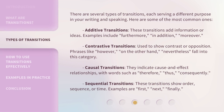There are several types of transitions, each serving a different purpose in your writing and speaking. Here are some of the most common ones. Additive transitions — these add information or ideas. Examples include: furthermore, in addition, moreover. Contrastive transitions are used to show contrast or opposition. Phrases like however, on the other hand, and nevertheless fall into this category.